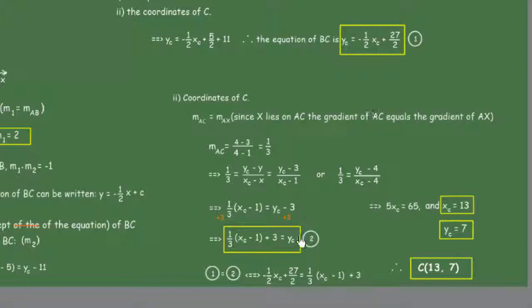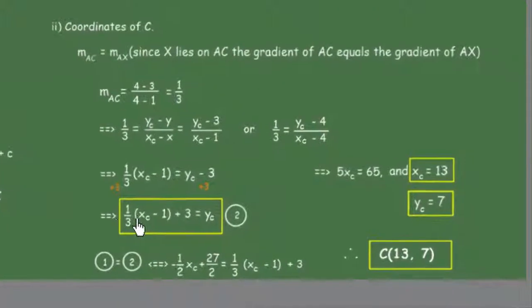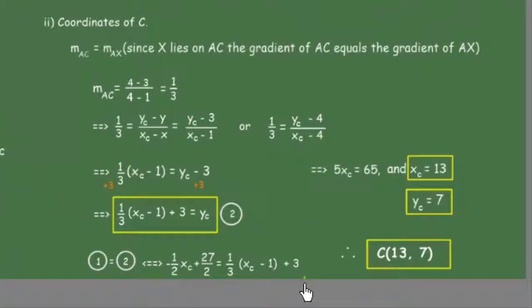We can work out these two equations 1 and 2 simultaneously using substitution. This gives us -1/2x_C + 27/2 = 1/3x_C - 1/3 + 3. Working that together, we get 5x_C = 65, and therefore x_C = 13.